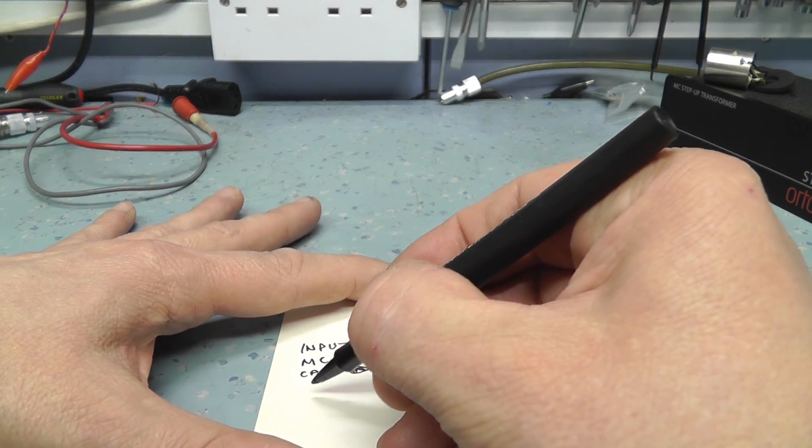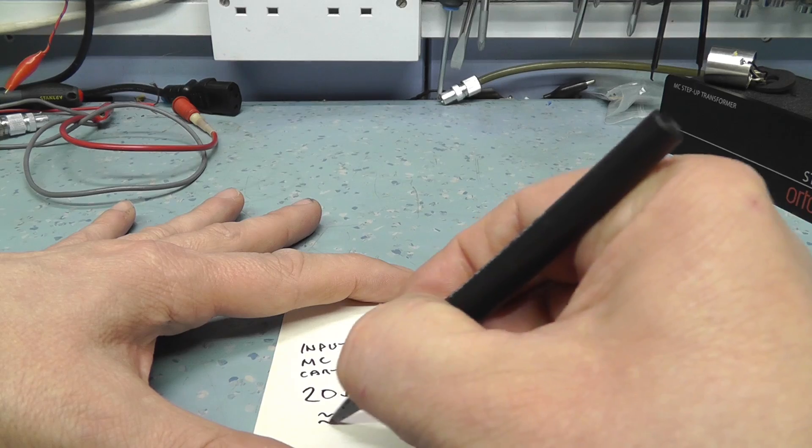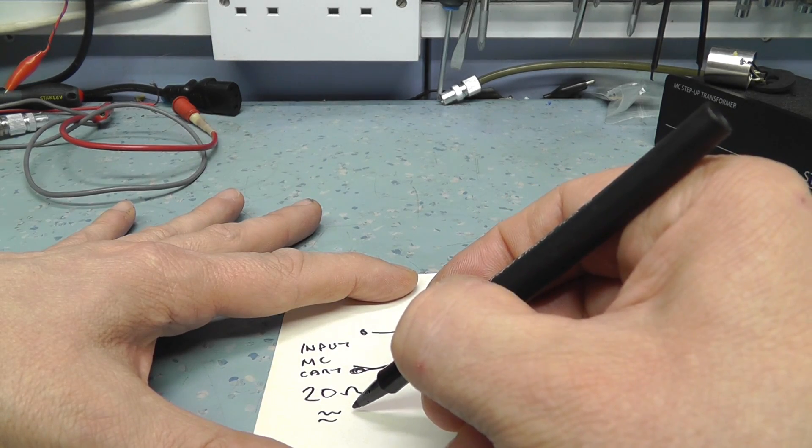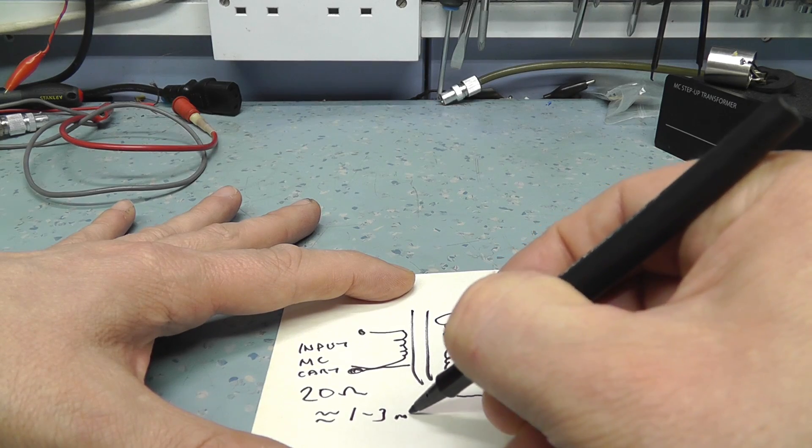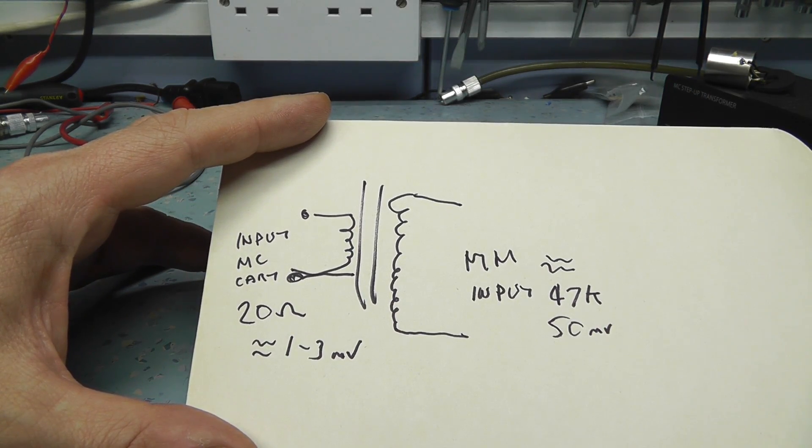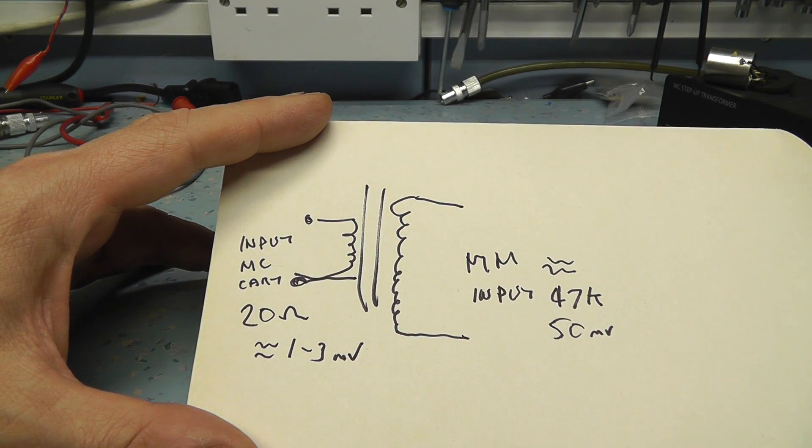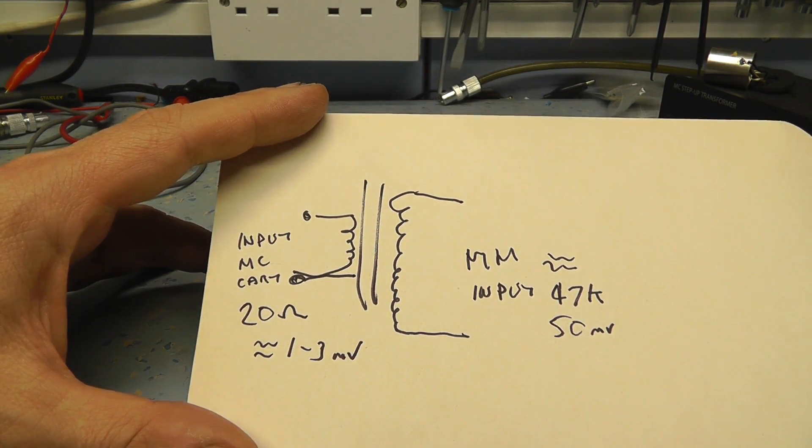And this will be usually around 20 ohms, something like that, 20 ohms and around, oh, let's say one to three millivolts. Depending on the type of moving coil cartridge you have, the sort of more expensive ones tend to be actually, funny enough, lower, lower output.